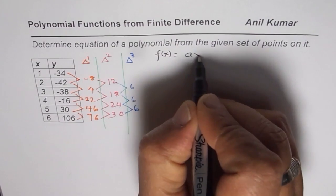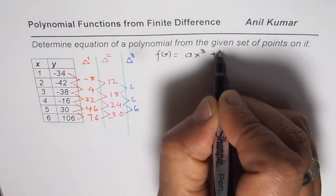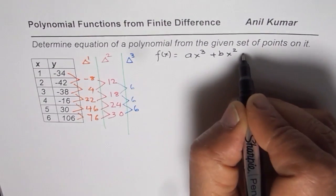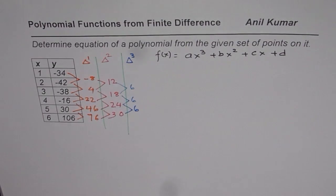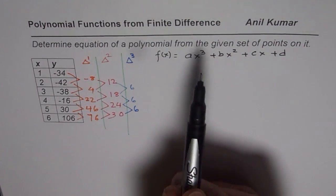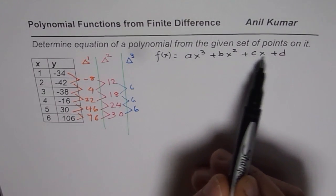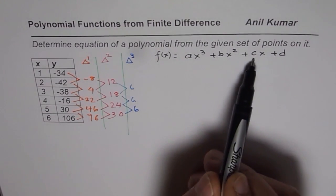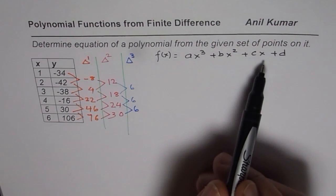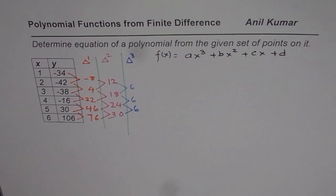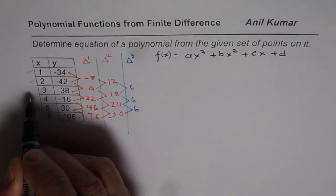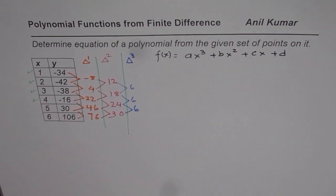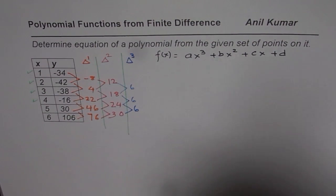So the general equation will be ax³ plus bx² plus cx plus d — that is a general cubic equation. In this equation we need to find a, b, c, and d — four unknowns. To find four unknowns we need four different equations. So we will consider these four points to write four equations.